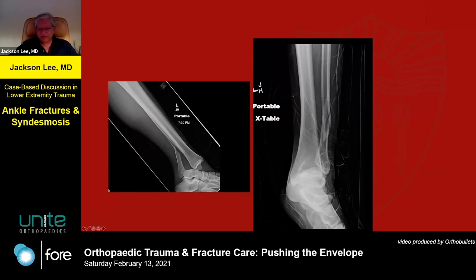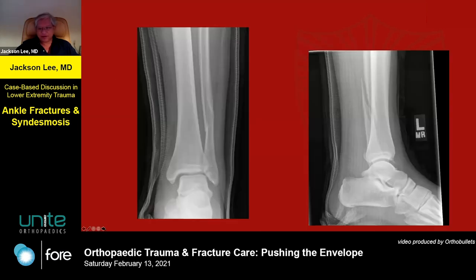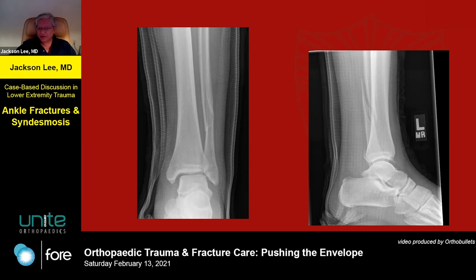Our goal as treatment here is to reduce the ankle and make it stable. Typically what most surgeons would do is some type of approach to the fibula, do a direct reduction under direct visualization. You can see this is a spiral oblique fracture of the fibula, so this is amenable to a classic lag screw neutralization plate stabilization. We'd then consider whether to approach the posterior malleolus and how to stabilize the syndesmosis — either by closed means using a clamp or by open means.